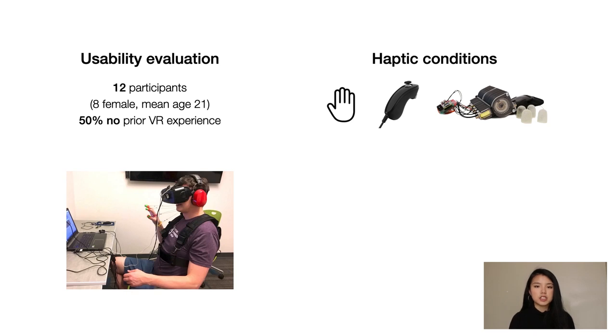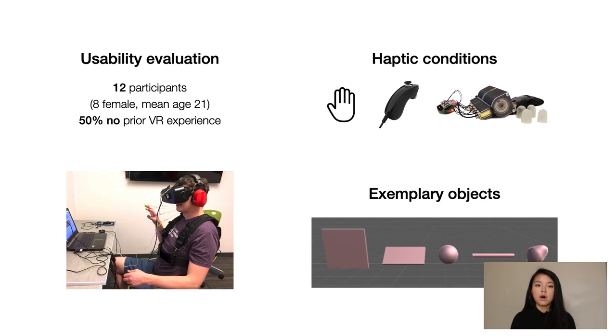In each haptic condition, participants interacted with five exemplary objects: a wall, a 45-degree tilted flat surface, a sphere, a pole, and an irregular object.